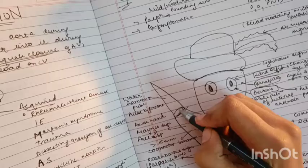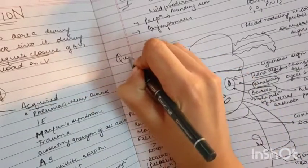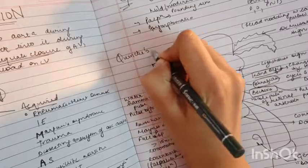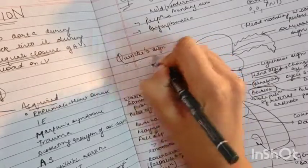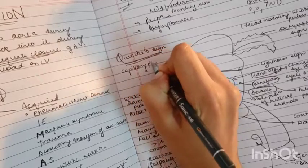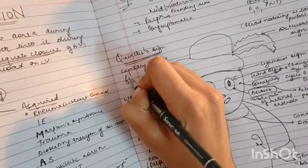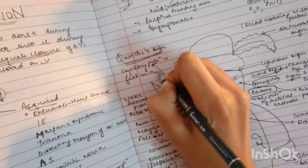Since this is the hand, he must have nails. The nails remind me of Quincke's sign. That is the capillary pulsation is felt in nail beds.